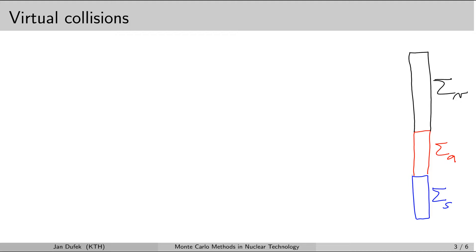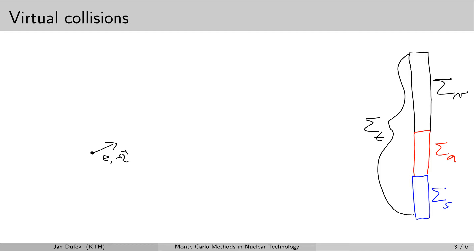So let's look at an example of a neutron history. Let's assume that a fission neutron is born at a certain position in the system. It has an energy and direction given to it, and we start to sample the distance to the next collision. Now this is our total macroscopic cross-section sigma_t — it is twice as big as it would be without the virtual cross-section. That means the distance between collisions is going to be twice as small as it would be without the virtual collisions.